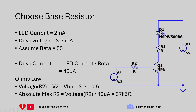We have 3.3 volts at the input and a PN junction voltage drop of 0.6 volts at the base, so the voltage drop across R2 is 3.3 minus 0.6, which is 2.7 volts. Resistance equals voltage divided by current: 2.7 volts divided by 40 microamps gives a maximum R2 value of 67.5 kilo ohms. Use a value smaller than this to provide sufficient current and ensure the transistor fully saturates and turns on.